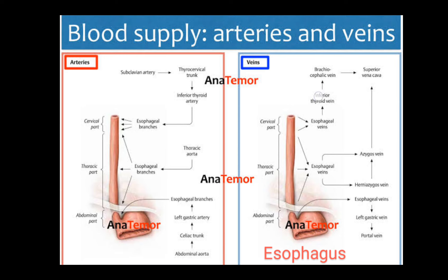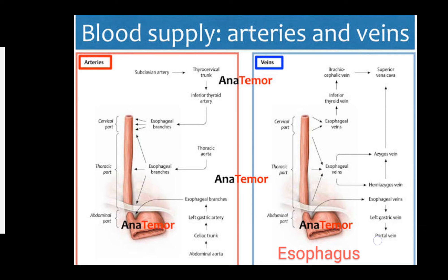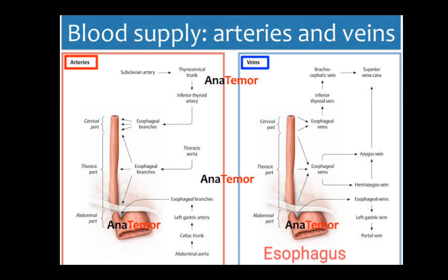The inferior thyroid vein drains into the brachiocephalic vein and then into the superior vena cava. The thoracic part of the esophagus drains into the hemiazygous and azygous veins, ultimately draining into the SVC. The abdominal part drains into the left gastric vein and then into the portal vein.